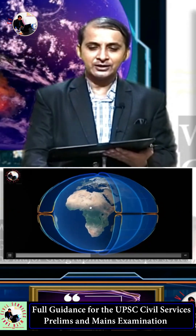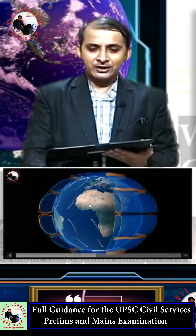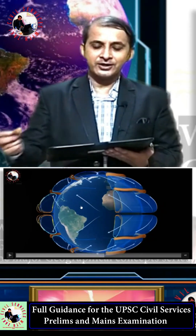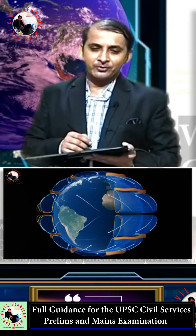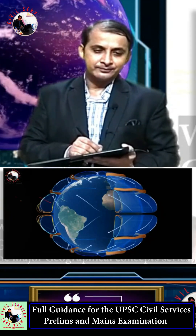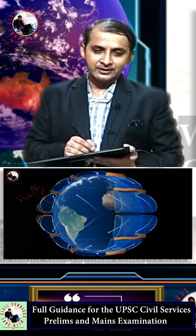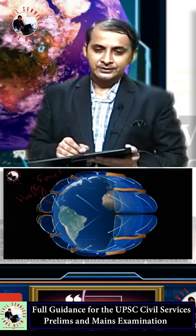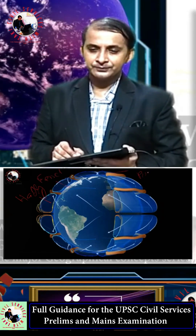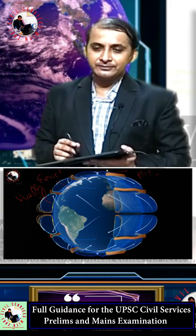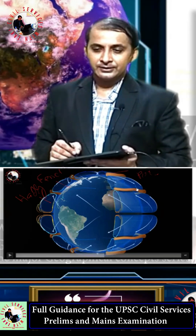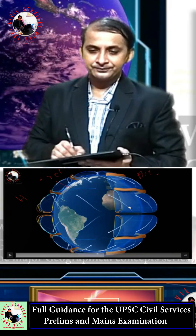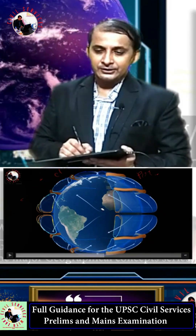As Earth rotates, it converts into three circulating cells in both directions. These three cells are: the Hadley cell, the Ferrel cell, and the Polar cell.